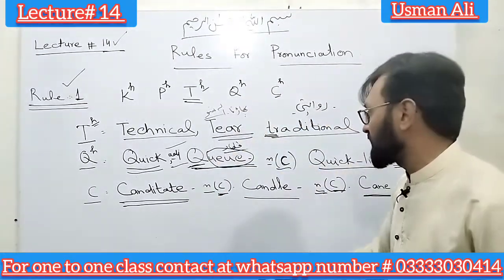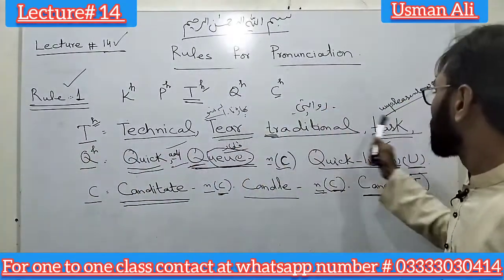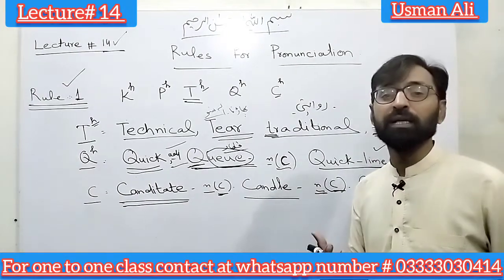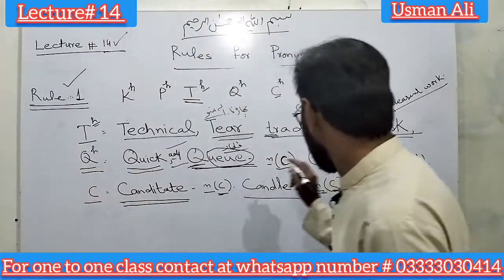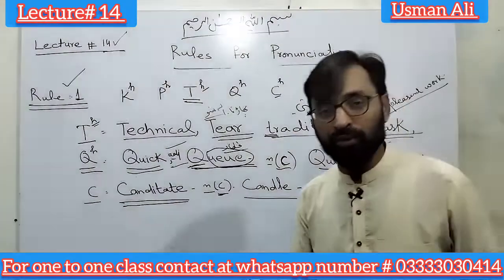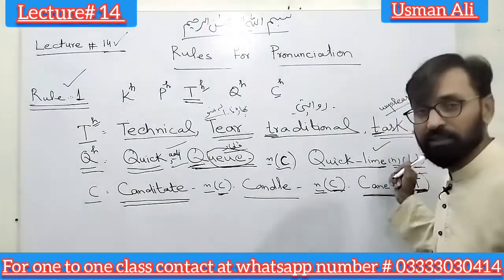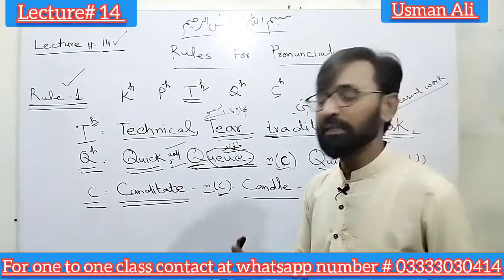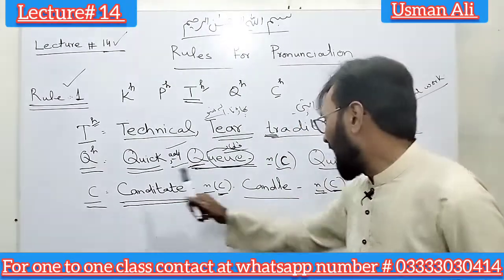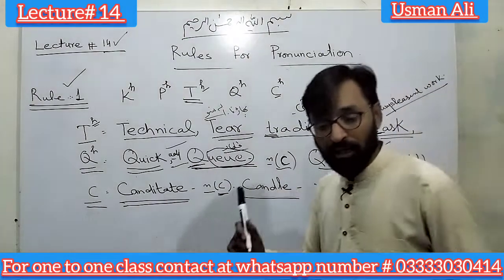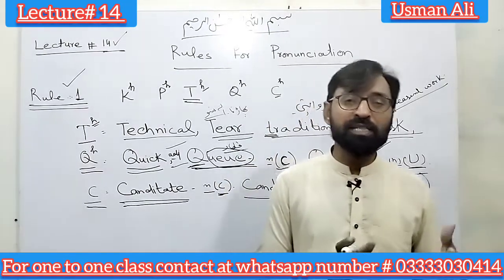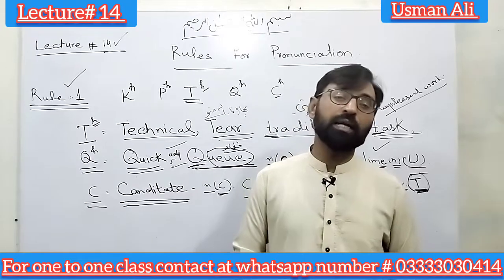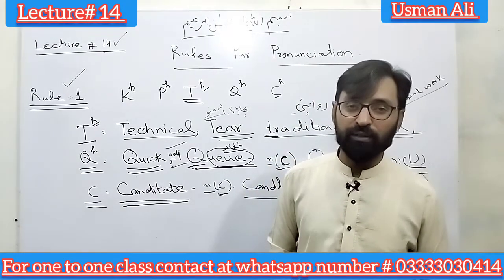Now your assignment: I have written four examples for T — you have to write five more. For Q, I have written three examples — you have to write seven more, making ten in total. Similarly for C when it gives the K sound — I have written three examples: 'carried', 'cattle', 'cane' — you have to add seven more to make ten. Inshallah I will check these in the Zoom class. اللہ تعالیٰ آپ سب کو بہت خوش رکھے۔ السلام علیکم ورحمۃ اللہ وبرکاتہ۔